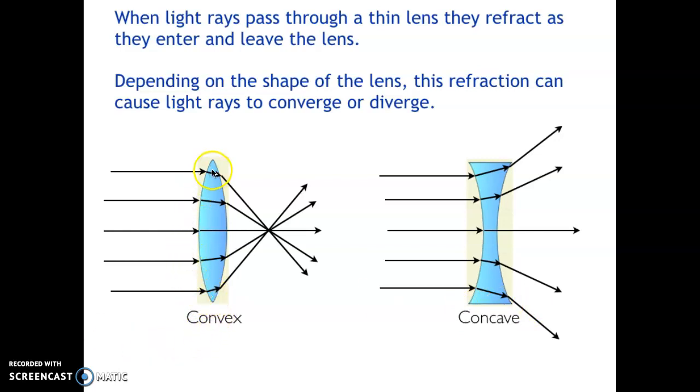This lens that bows outward in the middle is called a convex lens. If it bows inward, it is called concave.